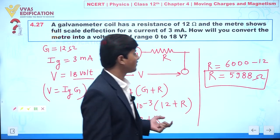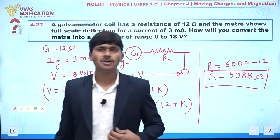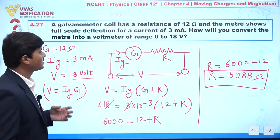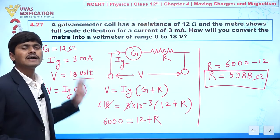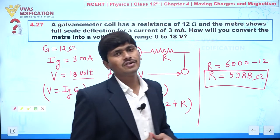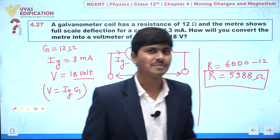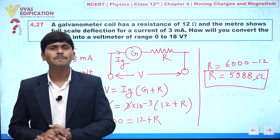Capital R value is given as 5988 ohm. Like this we can convert a galvanometer into a voltmeter. This is all about this question.